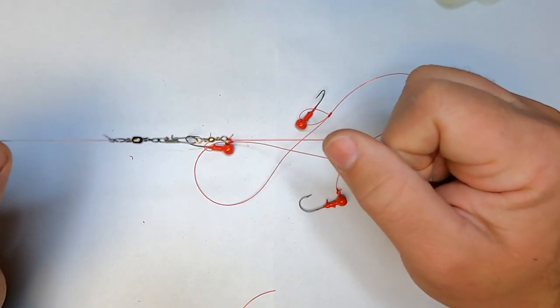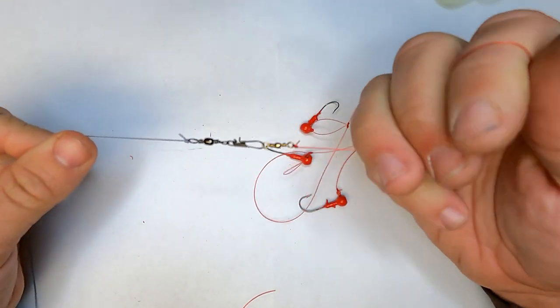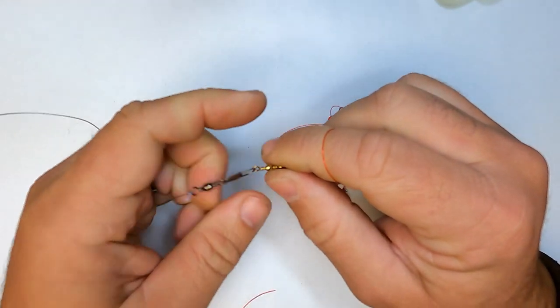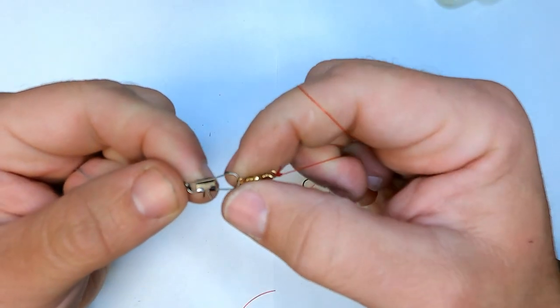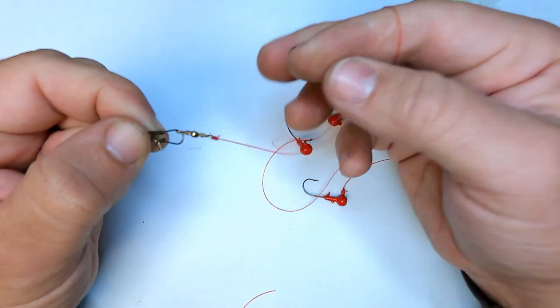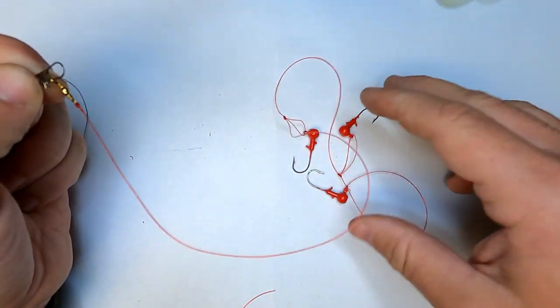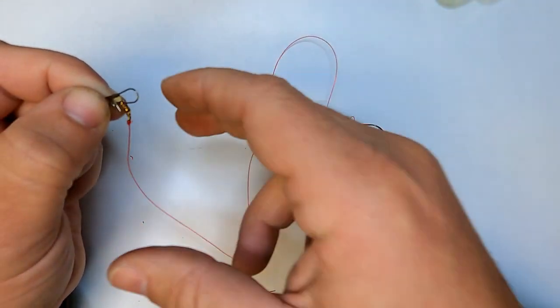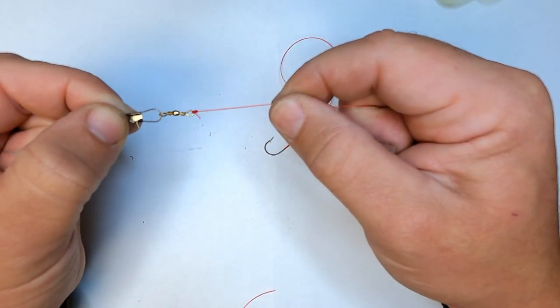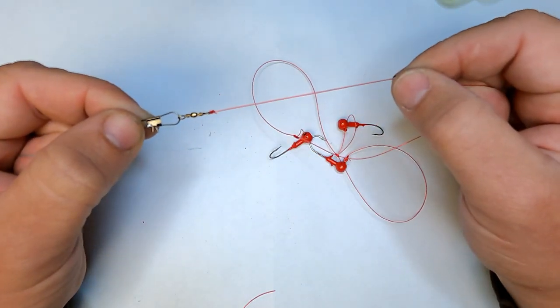And when I get snagged, because it is going to happen, I can pull, pull, pull. And either my snap swivel will open up and I'll lose all of my skipjack rig, or the monofilament will break and I'll lose all of my skipjack rig.